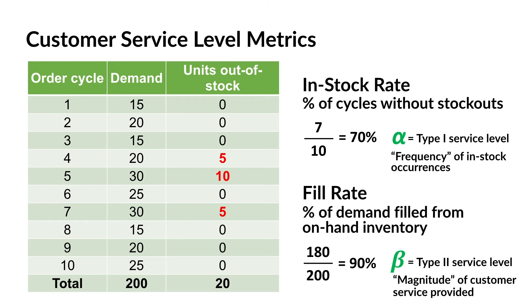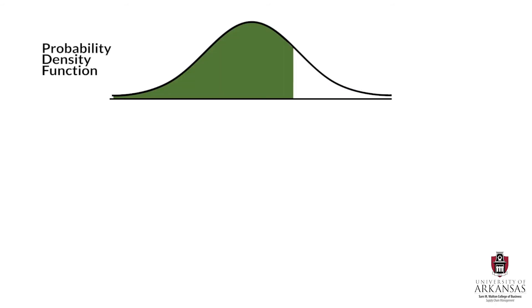Of course, it is quite easy to determine in-stock rates and fill rates when looking at historical data. But we can also statistically estimate fill rates. We have seen the probability density function of lead time demand before. And you may recall that alpha is the area shaded in green, and alpha ultimately defines the reorder point R.